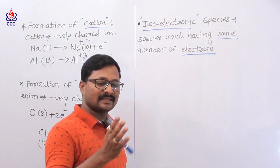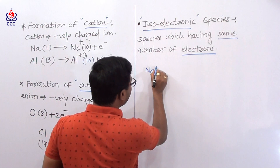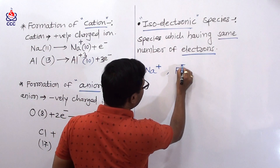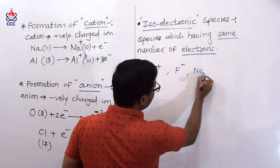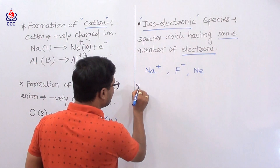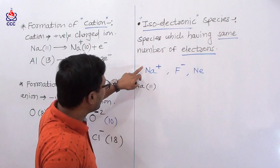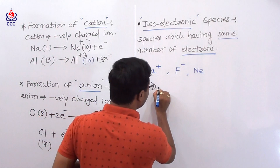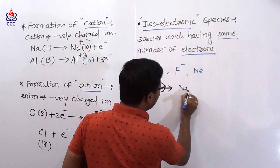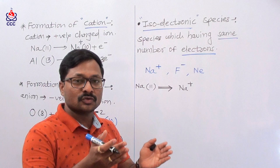Let's take a look at an example. For example: Na+ ion, F- ion, and neon. In the case of sodium — sodium's atomic number is 11, so it forms Na+ ion. Sodium loses 1 electron, so Na+ ion has 10 electrons. For fluorine — fluorine has atomic number 9. Fluorine gains 1 electron to form F- ion, so 9 plus 1 equals 10 electrons. Therefore F- ion has 10 electrons and Na+ ion has 10 electrons.